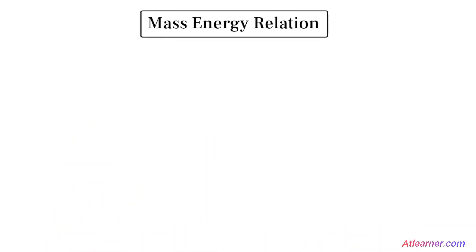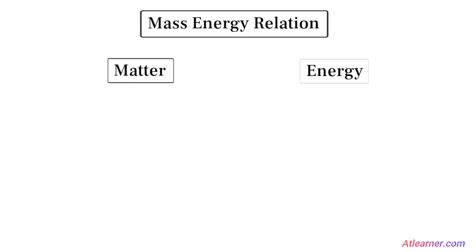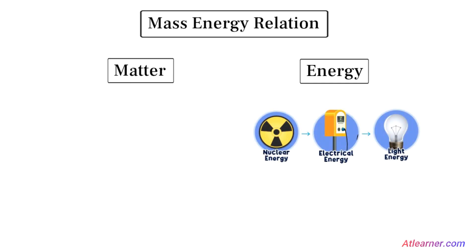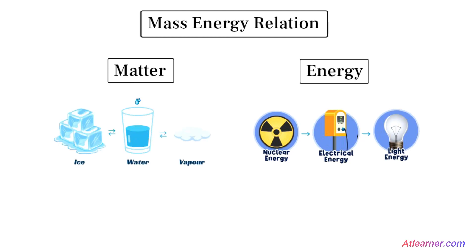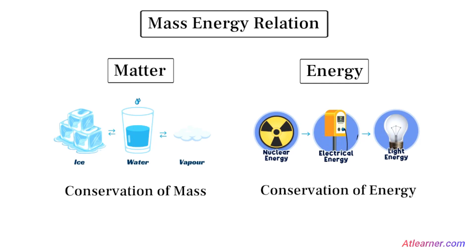According to classical physics, there are two entities of nature: matter and energy. They are both immortal — that is, matter or energy is not destroyable. Only one form of energy can be converted into another form of energy, and similarly it is also applicable to matter. All these understandings give rise to the law of conservation of mass and conservation of energy.